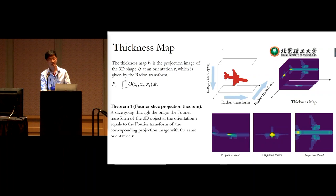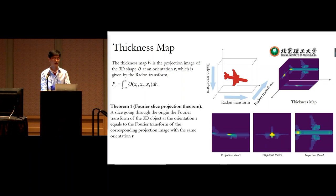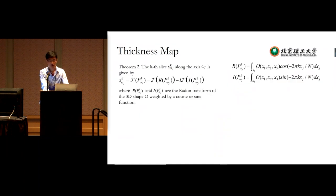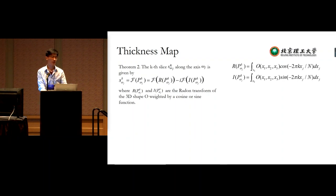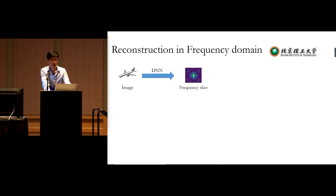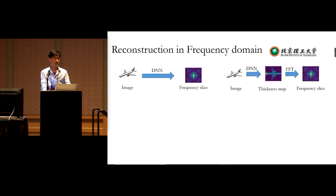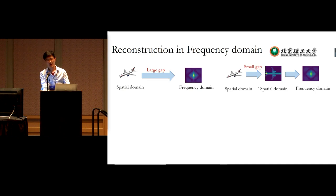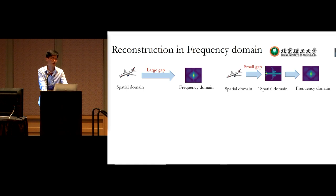We define the thickness map through the origin of the frequency space as the Radon transform of the 3D shape. According to the Fourier slice theorem, a slice through the origin equals the Fourier transform of the corresponding thickness map at the same orientation. For 2D slices not through the origin, we extend the Fourier slice theorem, showing these slices are the Fourier transform of a complex sequence map. The thickness map preserves geometry structure in the spatial domain, reducing the gap between the image and the frequency slices.